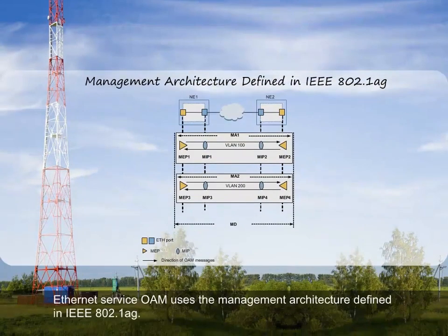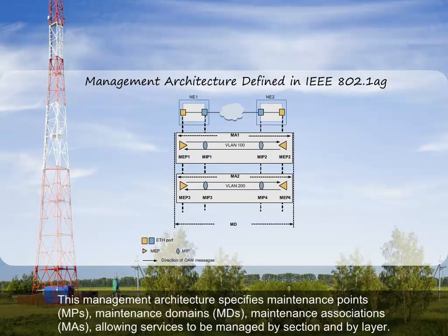Ethernet service OAM uses the management architecture defined in IEEE 802.1AG. This management architecture specifies maintenance points, MPs, maintenance domains, MDs, and maintenance associations, MAs, allowing services to be managed by section and by layer.